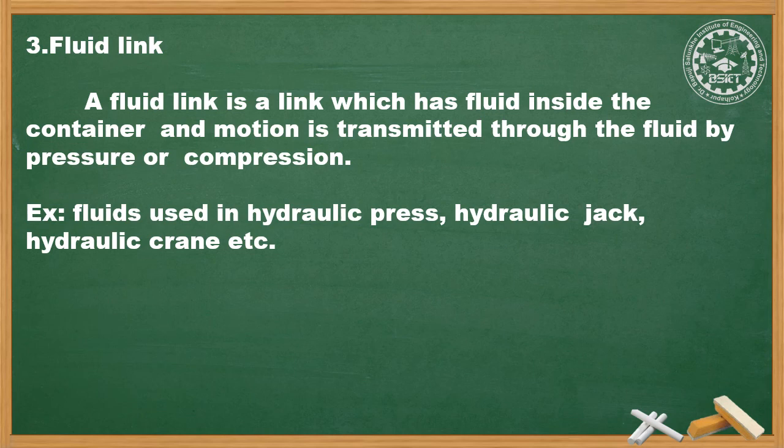A Fluid Link is a link which has fluid inside a container, and motion is transmitted through the fluid by pressure or compression. Examples include hydraulic jacks, hydraulic presses, and hydraulic cranes, which use oil or fluid. So we have three types of links: Rigid Link, Flexible Link, and Fluid Link.